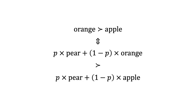Let us put our earlier example into this formal definition. Suppose x is a 100% probability of an orange and y is a 100% probability of an apple. I strictly prefer an orange to an apple. Suppose there is now a third possibility z — receiving a pear — which will be present with p equals 50% probability.